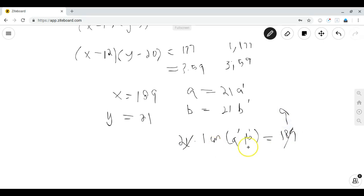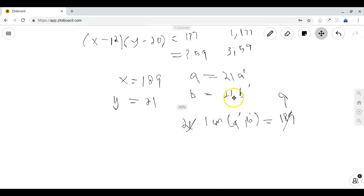So LCM of a prime, b prime equals 9. And these yield only two solutions, a prime equals 9, b prime equals 1, or a prime equals 1 and b prime equals 9.